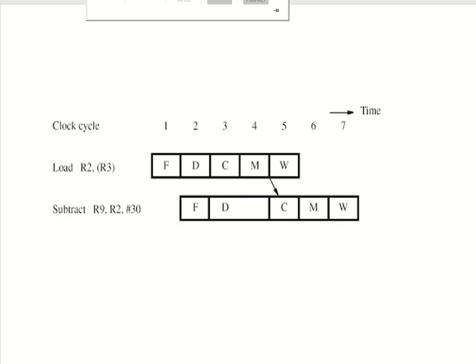Consider an example like this where we have a load instruction followed by a subtract instruction, and the destination register is a source operand in the subtract instruction.